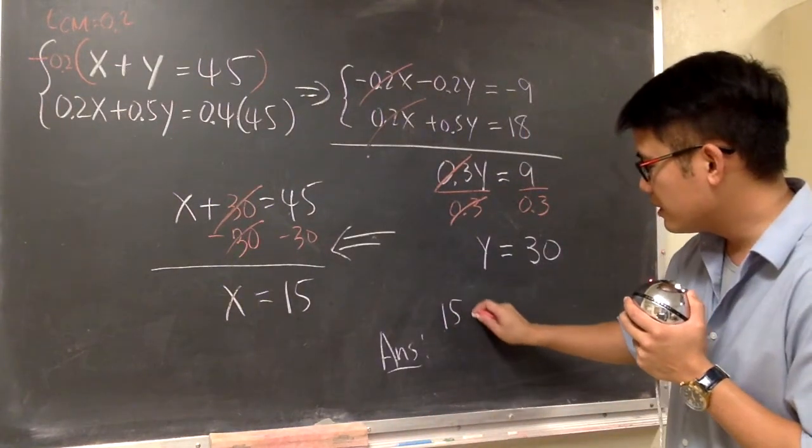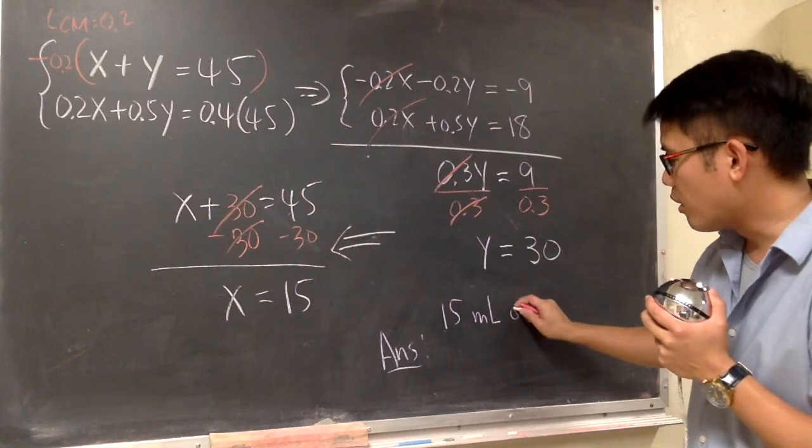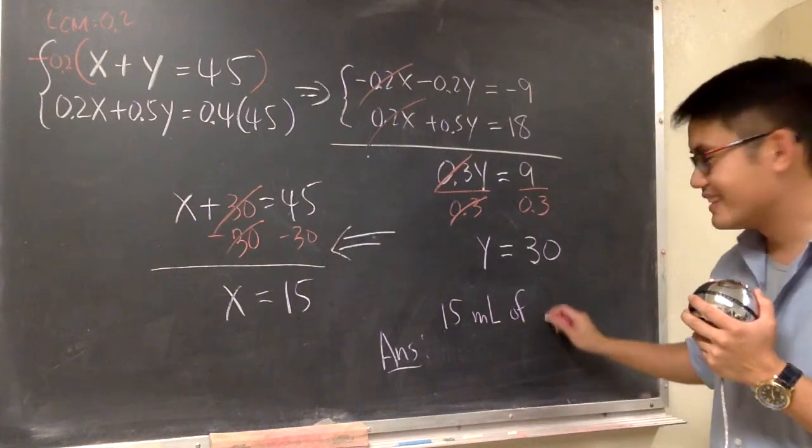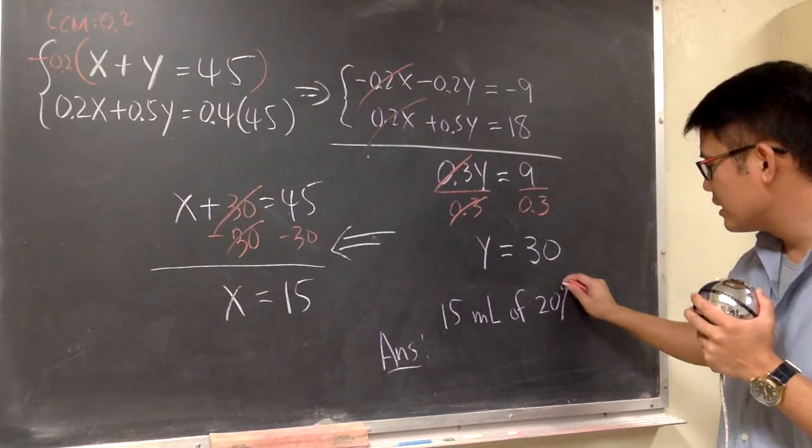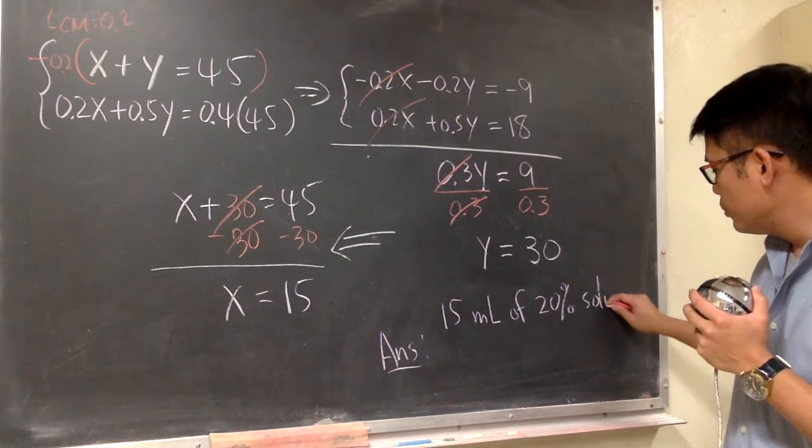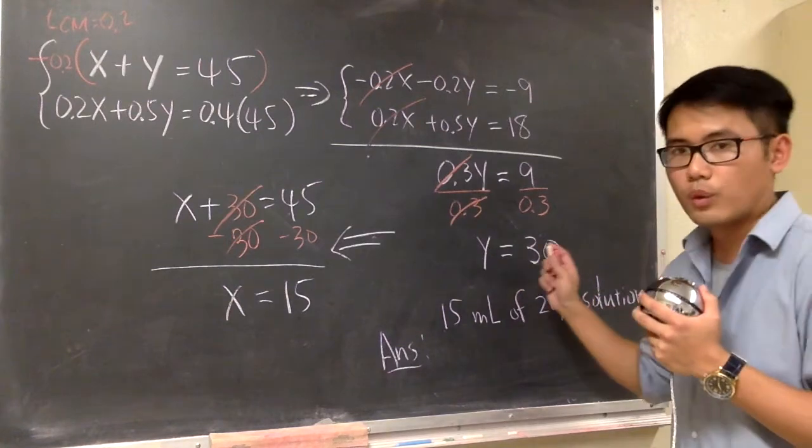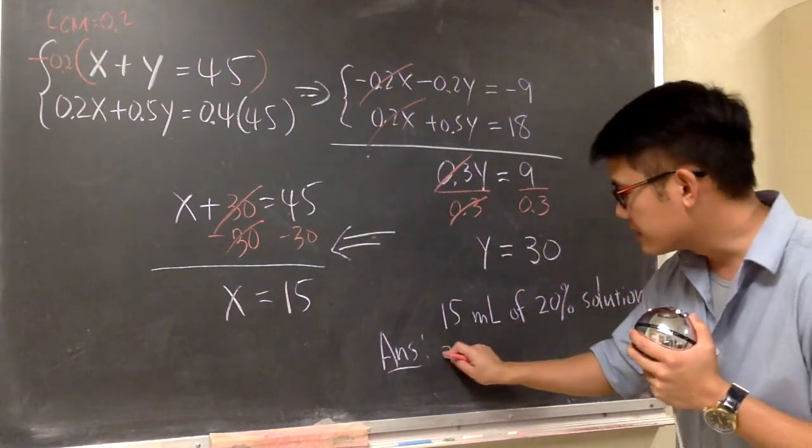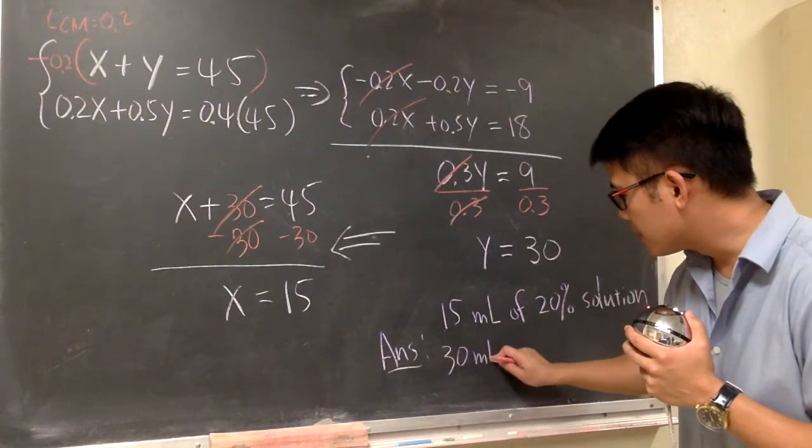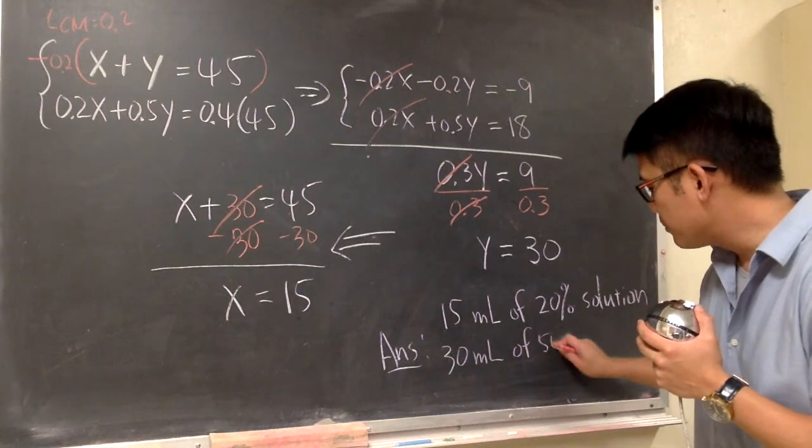You have to write down 15 milliliters of what? The 20% solution. And then, for the y being 30, that's 30 milliliters of the 50% solution.